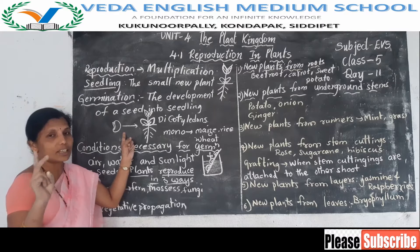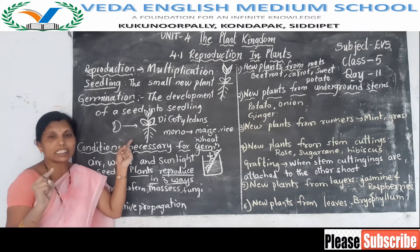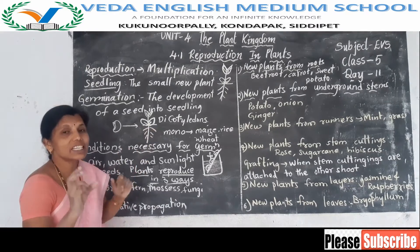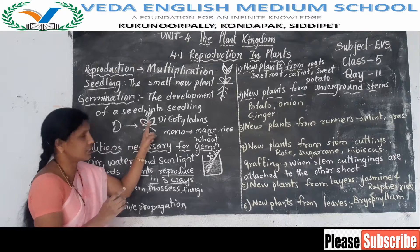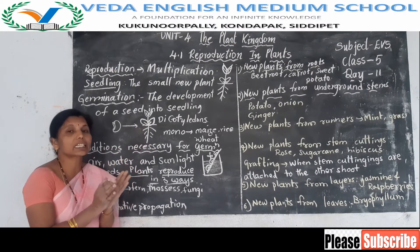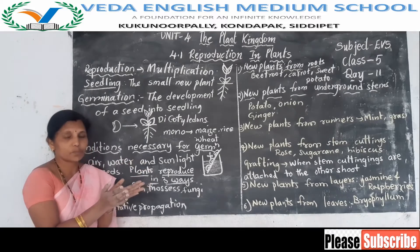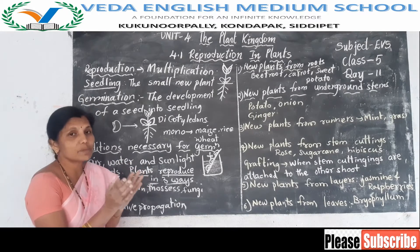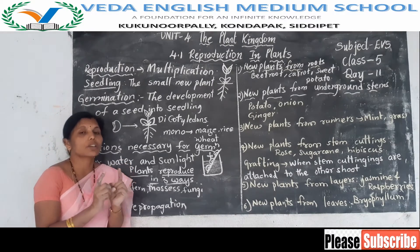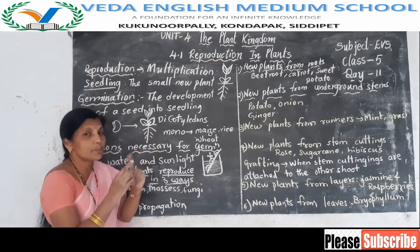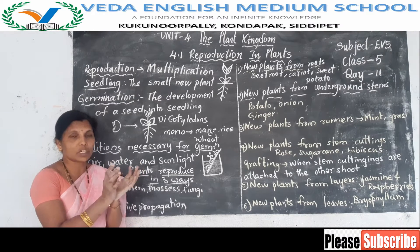There are two types of seeds: dicotyledon seeds and monocotyledon seeds. Some seeds have two seedlings. For example, if you break gram seeds, it breaks into two equal halves, meaning there are two seedlings inside.